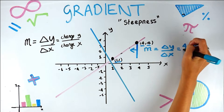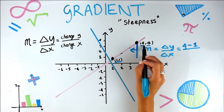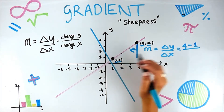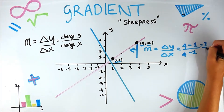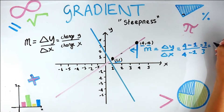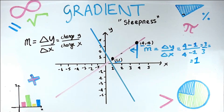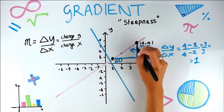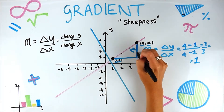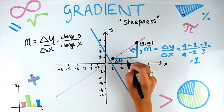So we have: change in y = 4 minus 1, and change in x = 4 minus 1, which gives us three over three, which equals one. So the gradient is one — the steepness of that slope is one. You can count it: change in y is one, two, three, and change in x is one, two, three.